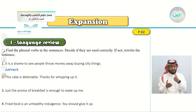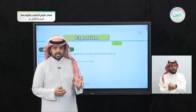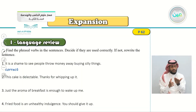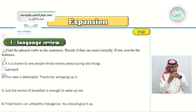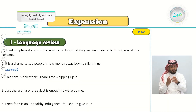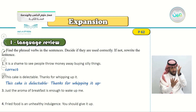Number two: 'This cake is delectable. Thanks for whipping up it.' The phrasal verb is 'whip up.' This is incorrect. The correct way is: 'Thanks for whipping it up.' We put the pronoun in the middle. So the correct sentence is: 'This cake is delectable. Thanks for whipping it up.'